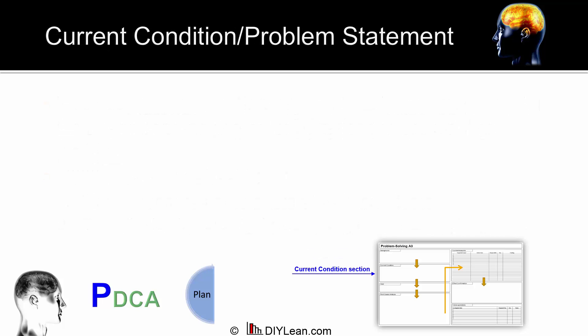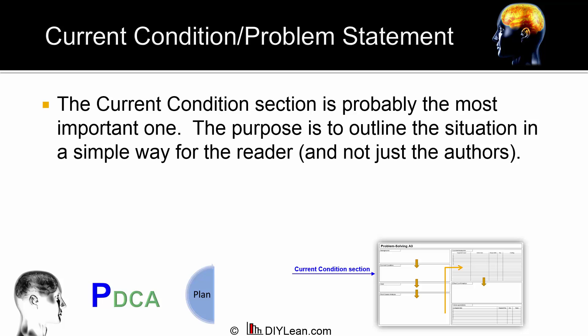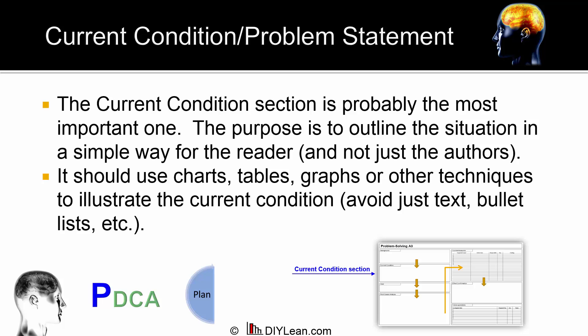The current condition, or problem statement, is important. Here we want to be very clear about what we are going to achieve. For example, getting new products to market is currently taking 12 to 18 months from concept to sitting on a retailer shelf. Our competition is doing the same thing in 10 months. We are losing market share because we are not as nimble as our competition. Try to use visual means to help illustrate this current condition, as opposed to text, lists, etc.